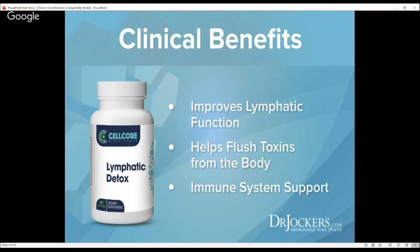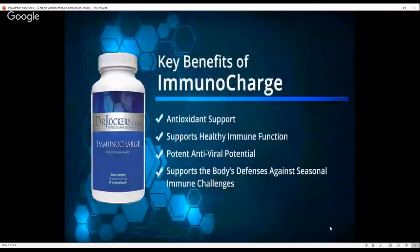You can also look for teas containing sheep sorrel and burdock root, or find Essiac tea to drink on a daily basis. Other herbs in the formula include astragalus — a very powerful antiviral and adaptogenic herb that helps balance stress hormones, blood sugar, and sleep quality — as well as graviola and slippery elm, which are really good for the gut, liver, kidneys, and supporting the immune system.